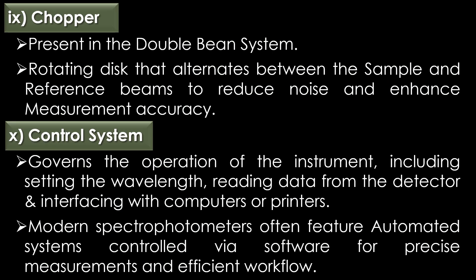Chopper: the chopper is present in the double beam system. It is a rotating disc that alternates between the sample and reference beams to reduce noise and enhance measurement accuracy. Control system: the control system governs the operation of the instrument, including setting the wavelength, reading data from the detector, and interfacing with external systems like computers or printers. Modern spectrophotometers often feature automated systems controlled via software for precise measurement and efficient workflow.